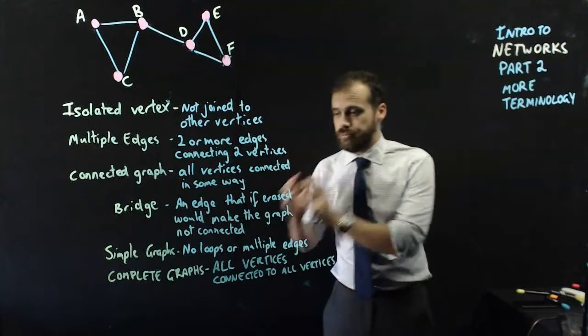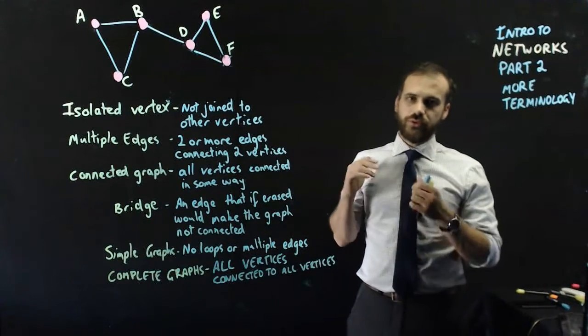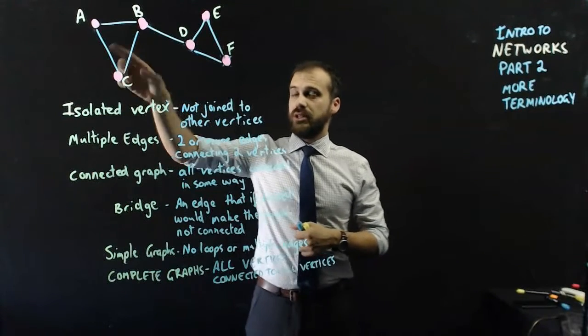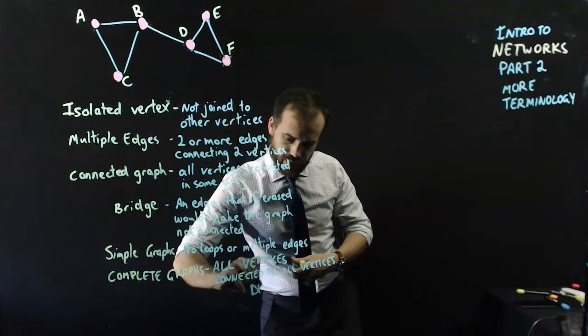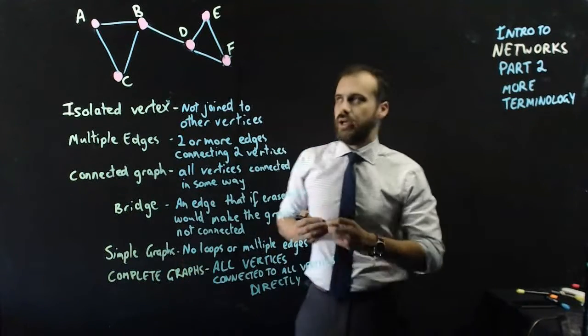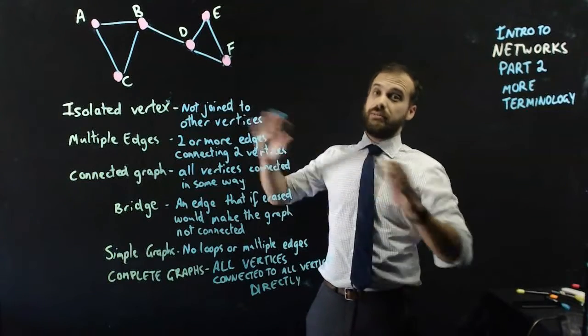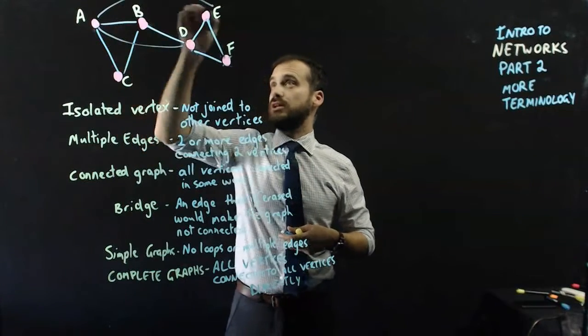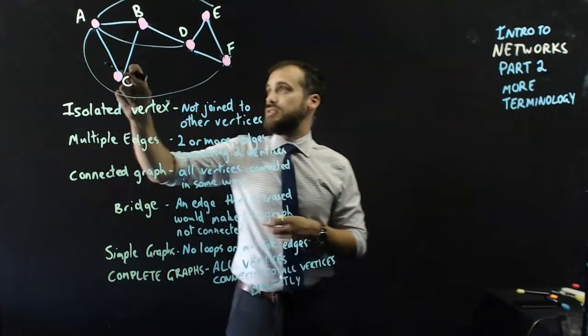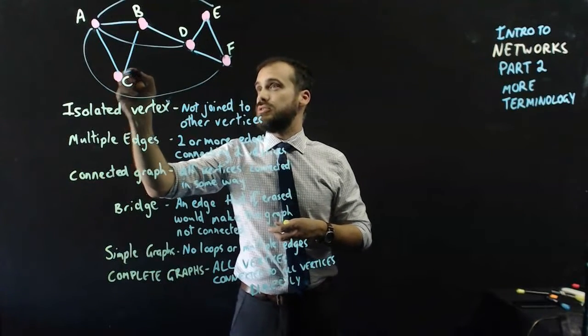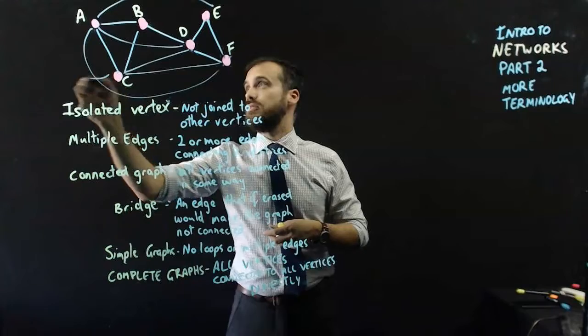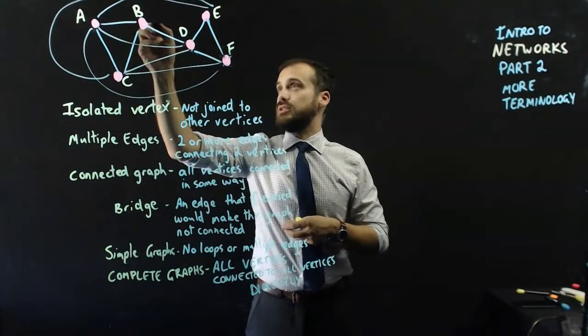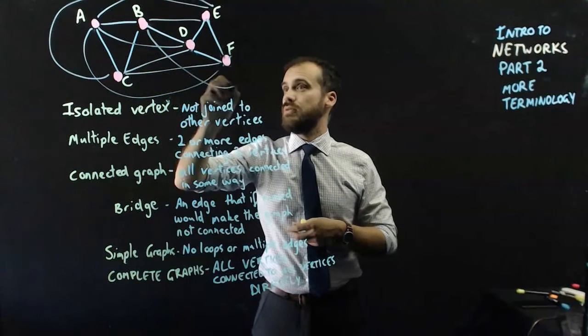And finally, that brings us to complete graphs. All vertices are connected to all vertices. Now, things are going to get really ugly here. A is connected to B and C, but it's not connected to D, E, and F directly. To make this graph complete, I'm going to have to make a complete mess of it. A is connected to B, A is connected to C, A needs to also be connected directly to D, directly to E, and directly to F. C is connected to A and to B, but it also needs to be connected to D, F, and E. B is connected to A, C, and D, but it also needs to be connected to E, and it also needs to be connected to F.